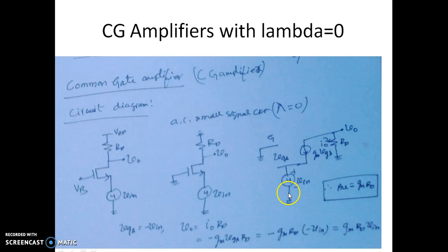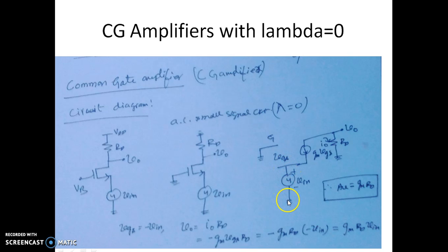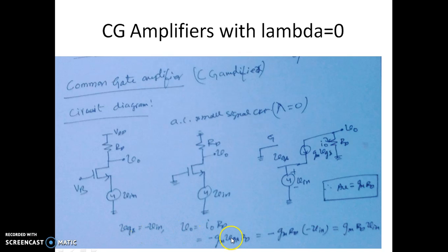Since the gate is grounded, VGS — where gate is positive and source is negative — but the input VIN has the source connected to plus and the negative is grounded. From this we can clearly make out that VGS is actually minus of VIN. Substituting VGS as minus VIN in the V0 expression, we get V0 = Gm·RD·VIN.